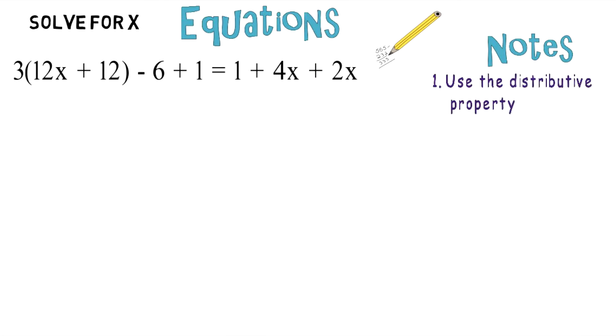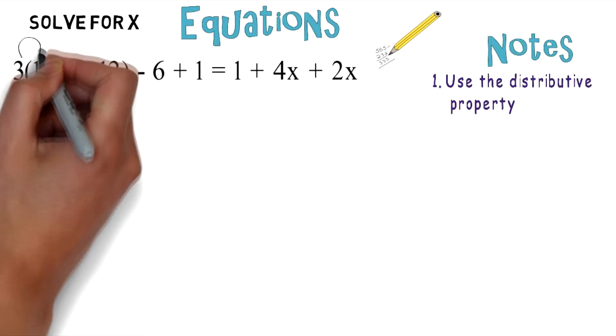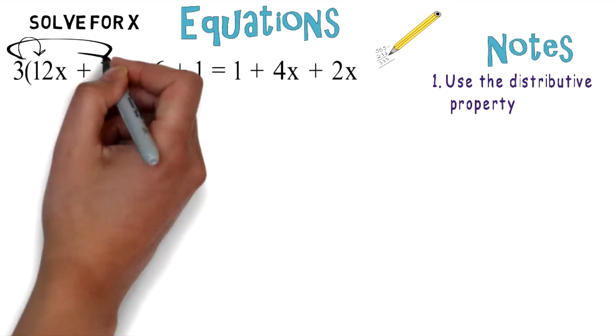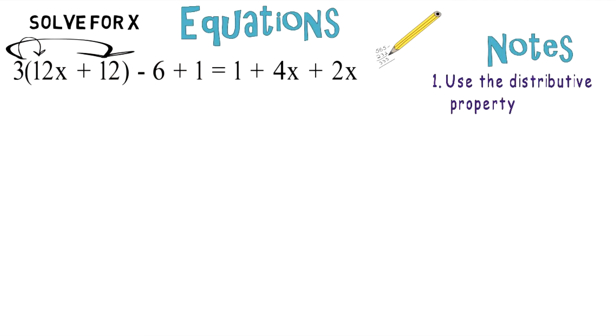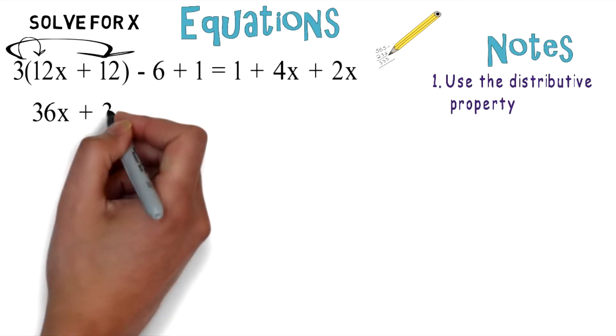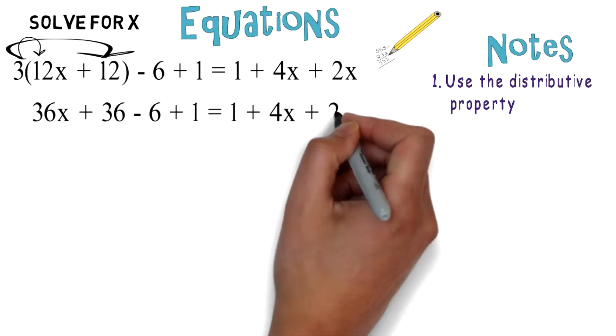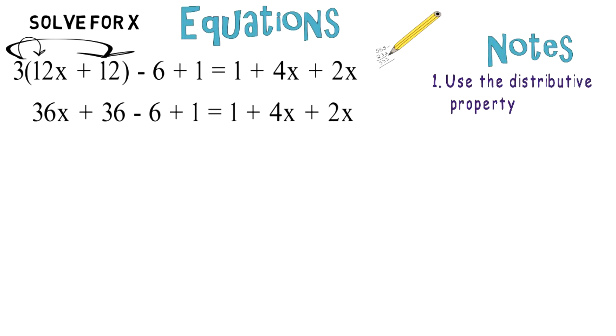For example, you multiply 3 times 12x, and then you multiply 3 times 12. You wind up getting 36x + 36 - 6 + 1 = 1 + 4x + 2x.